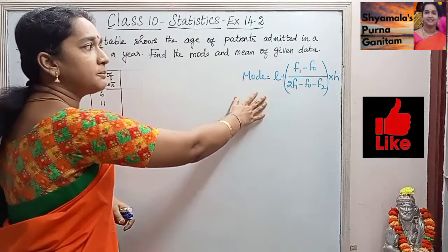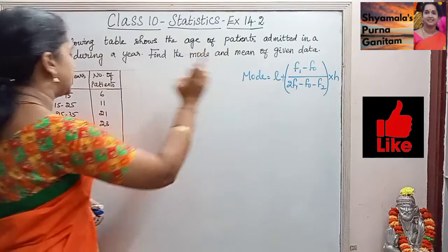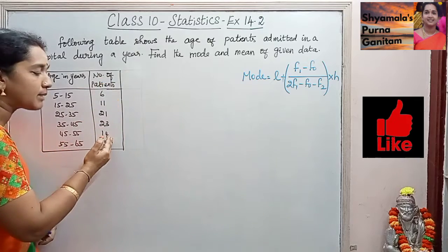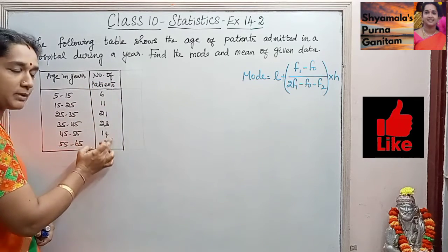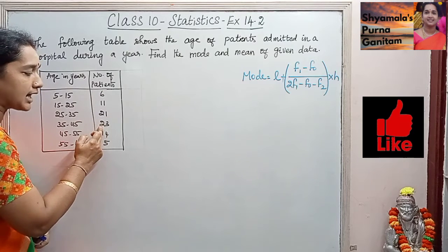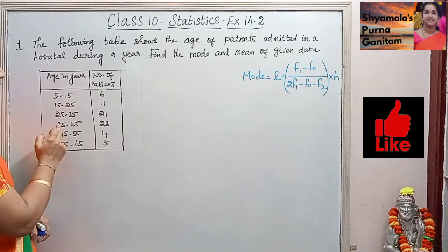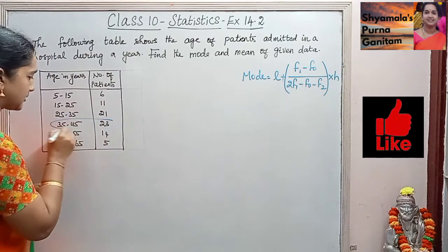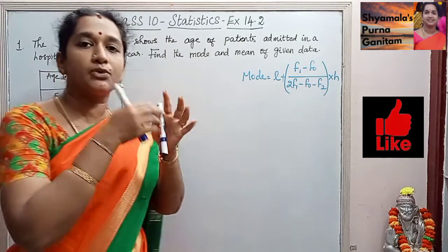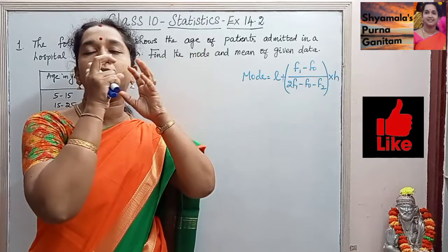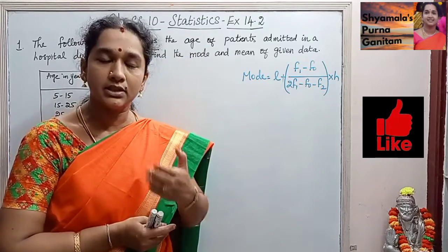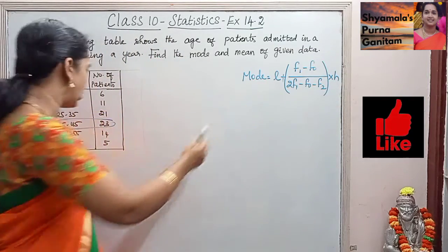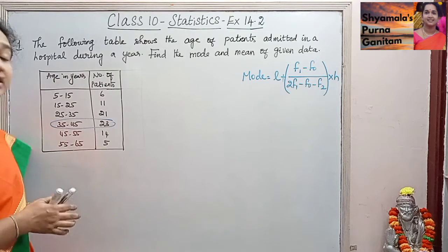I will give explanation for all the variables in the formula. L is the lower limit of the modal class. The modal class is where the maximum frequency occurs. The maximum frequency here is 23 patients in the age group 35 to 45, so this is the modal class. L is therefore 35.